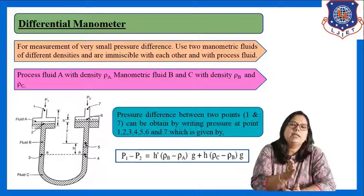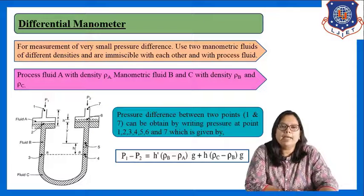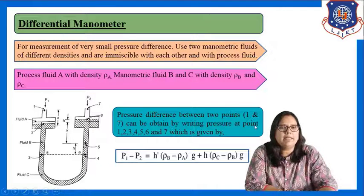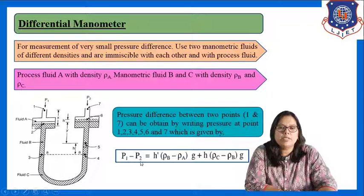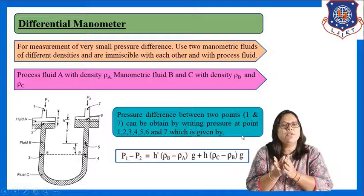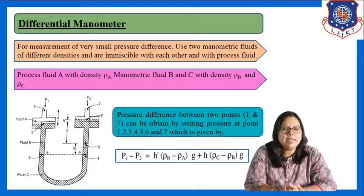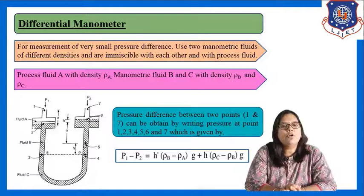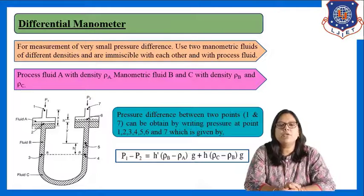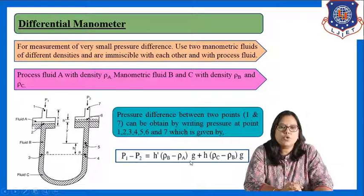In a similar way to the U-tube manometer, we write the pressure at points 1 through 7, then equate the pressure at point 7 to P2. After simplifying, we get: P1 − P2 = h'·(rho_B − rho_A)·g + h·(rho_C − rho_B)·g. So delta P = P1 − P2 = h'·(rho_B − rho_A)·g + h·(rho_C − rho_B)·g.